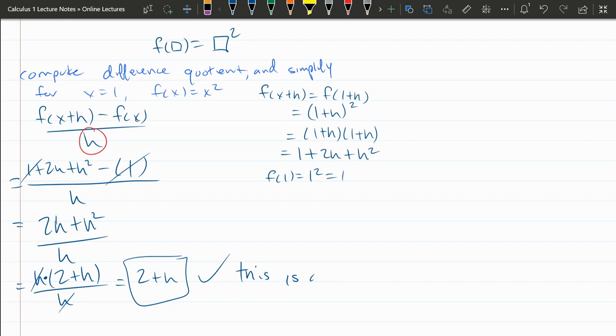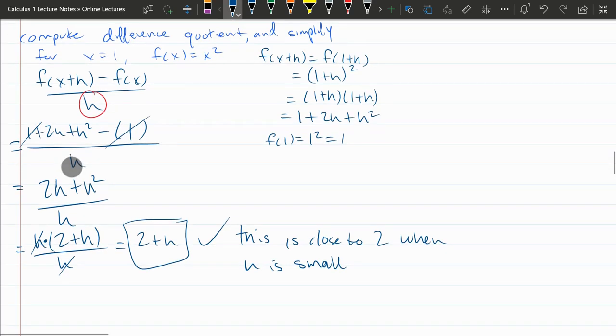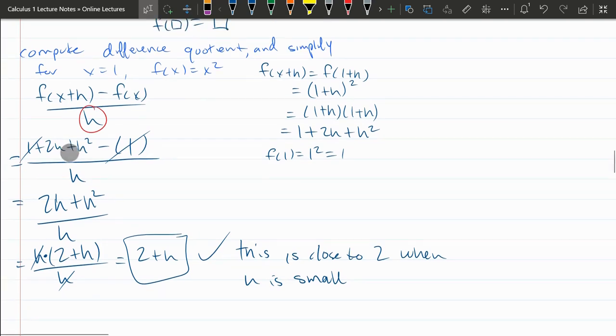This is close to 2 when h is small. We'll get quite a bit more precise very soon, and we'll take a limit when h goes to 0. But for now, this is our answer to the difference quotient simplified.